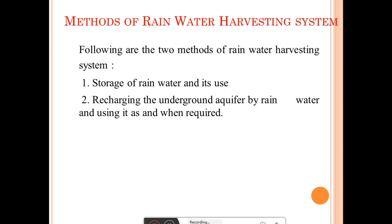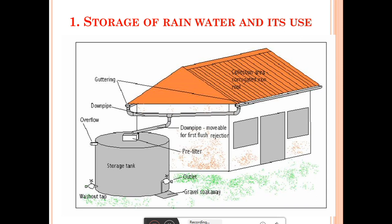There are mainly two types of methods for rainwater harvesting. The first one is storage of rainwater and its use. The second one is recharging the underground aquifer by rainwater and using it when required.